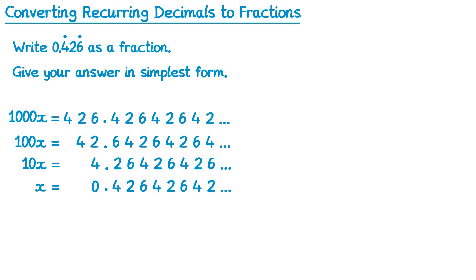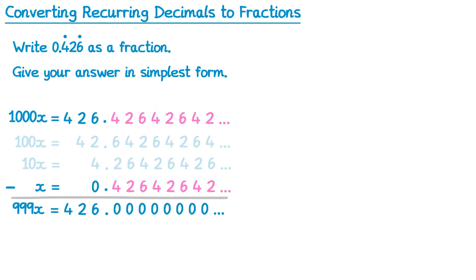What we can do then is set 100x and 10x into the background, because we don't need those, and subtract. On the left we have 1000x take away x, which is 999x. We then have the equals sign. Moving to the right, 426 take away 0 is 426. And of course, we know all of the digits after the decimal point line up, so they'll all give 0s. What we're left with then for this one is 999x equals 426. And now we finish by dividing by 999 on both sides, to get x equals 426 divide 999. Now this time this one does simplify. Both the top and bottom have factors of 3. So if we divide by 3, we get 142 over 333.